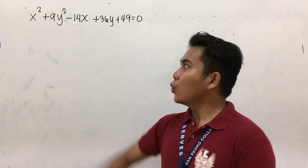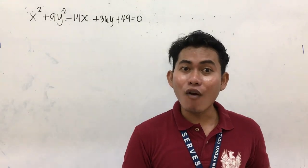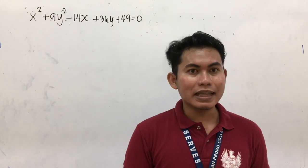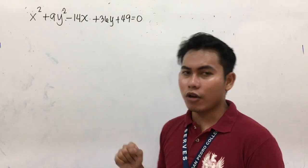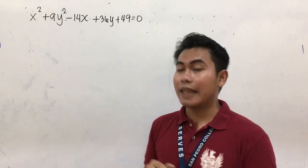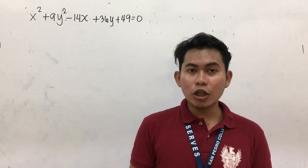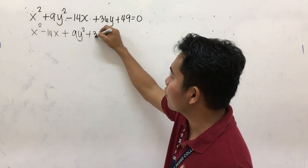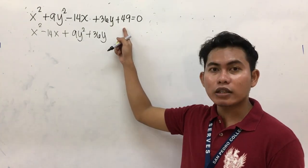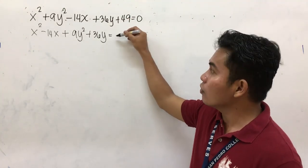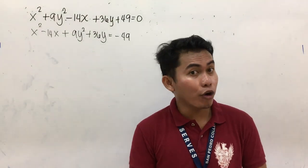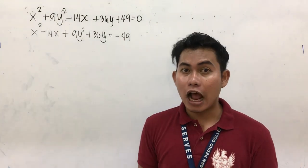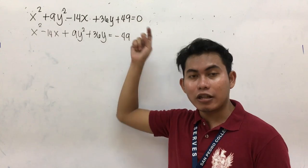For our second example, the equation is given in general form. We are going to transform this general form to standard form in order to find the center, the major axis, and the minor axis. The first step: arrange the terms according to the variable — group x terms and y terms together. Transpose the constant term to the other side; the constant is positive 49, so transposing gives negative 49.